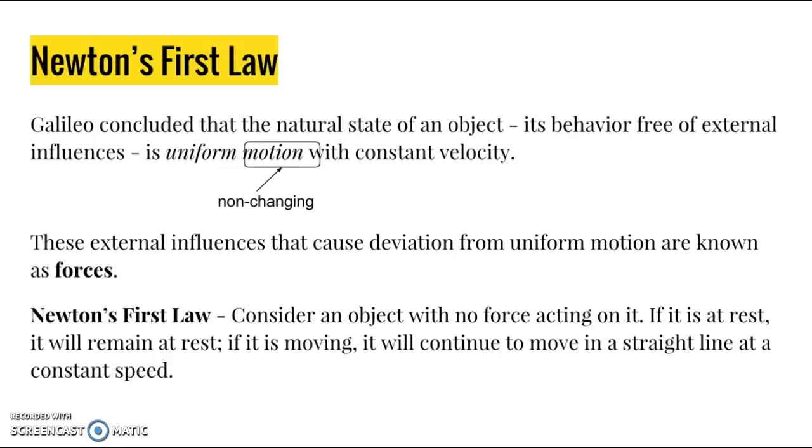We can summarize this as Newton's First Law. Consider an object with no forces acting on it. If it is at rest, the object will remain at rest. If the object is moving, it will continue to move in a straight line at a constant speed, so it will be in uniform motion. You can always think of Newton's First Law as an object's in uniform motion, because if it's not moving, that's still uniform motion with the velocity of zero.